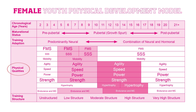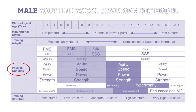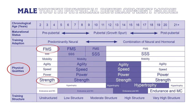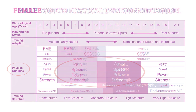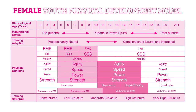The physical qualities section of the model is the most important — it's where we identify the specific training types to focus on and when. You'll notice there are different sizes of text, and that's important: the bigger the text, the more important the physical quality is and the more likely it will respond to training. So fundamental movement skills and strength are given more importance than all other physical qualities in early childhood, but agility, speed, power and strength become the primary focus from middle childhood and through the adolescent growth spurt.